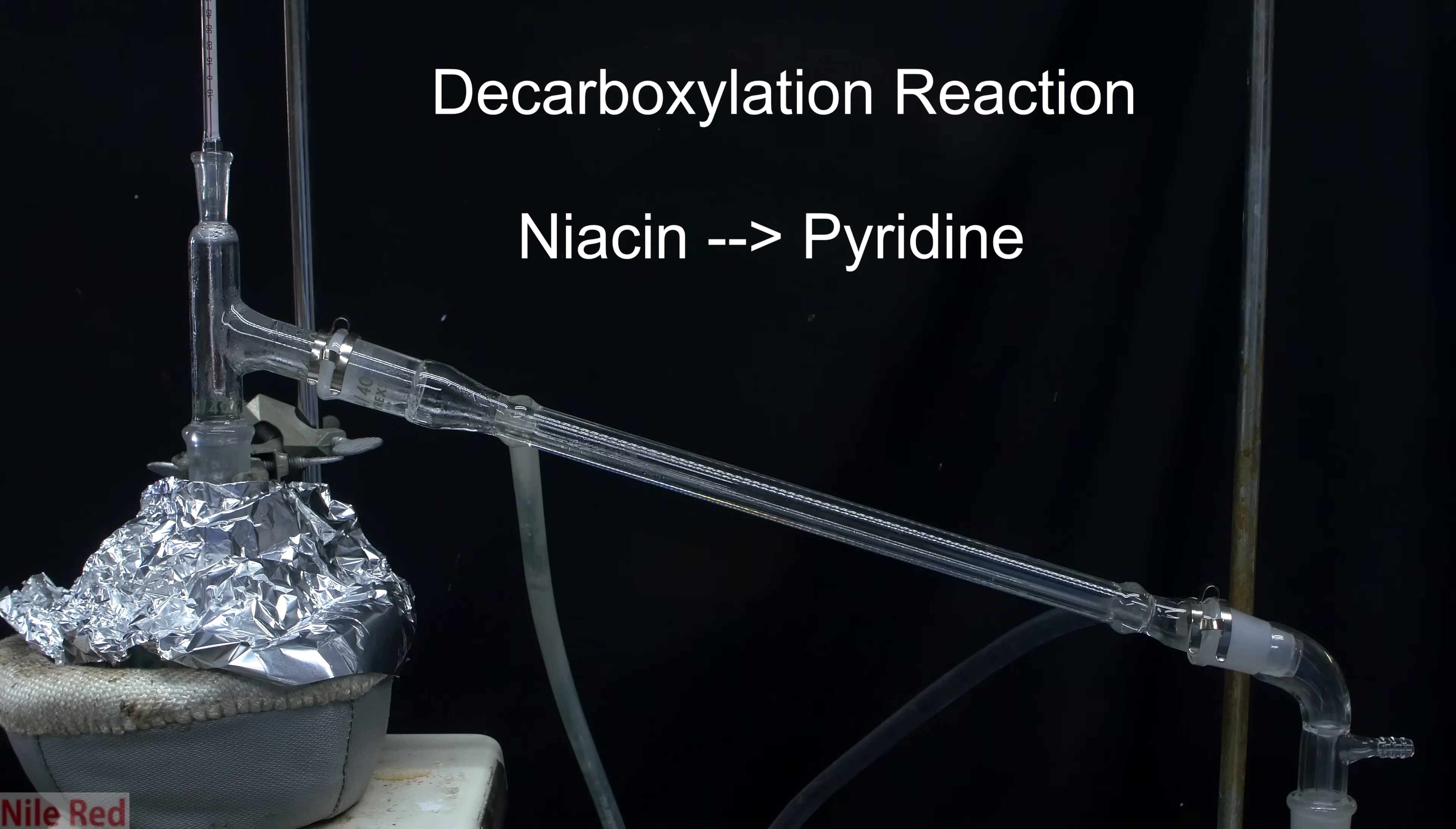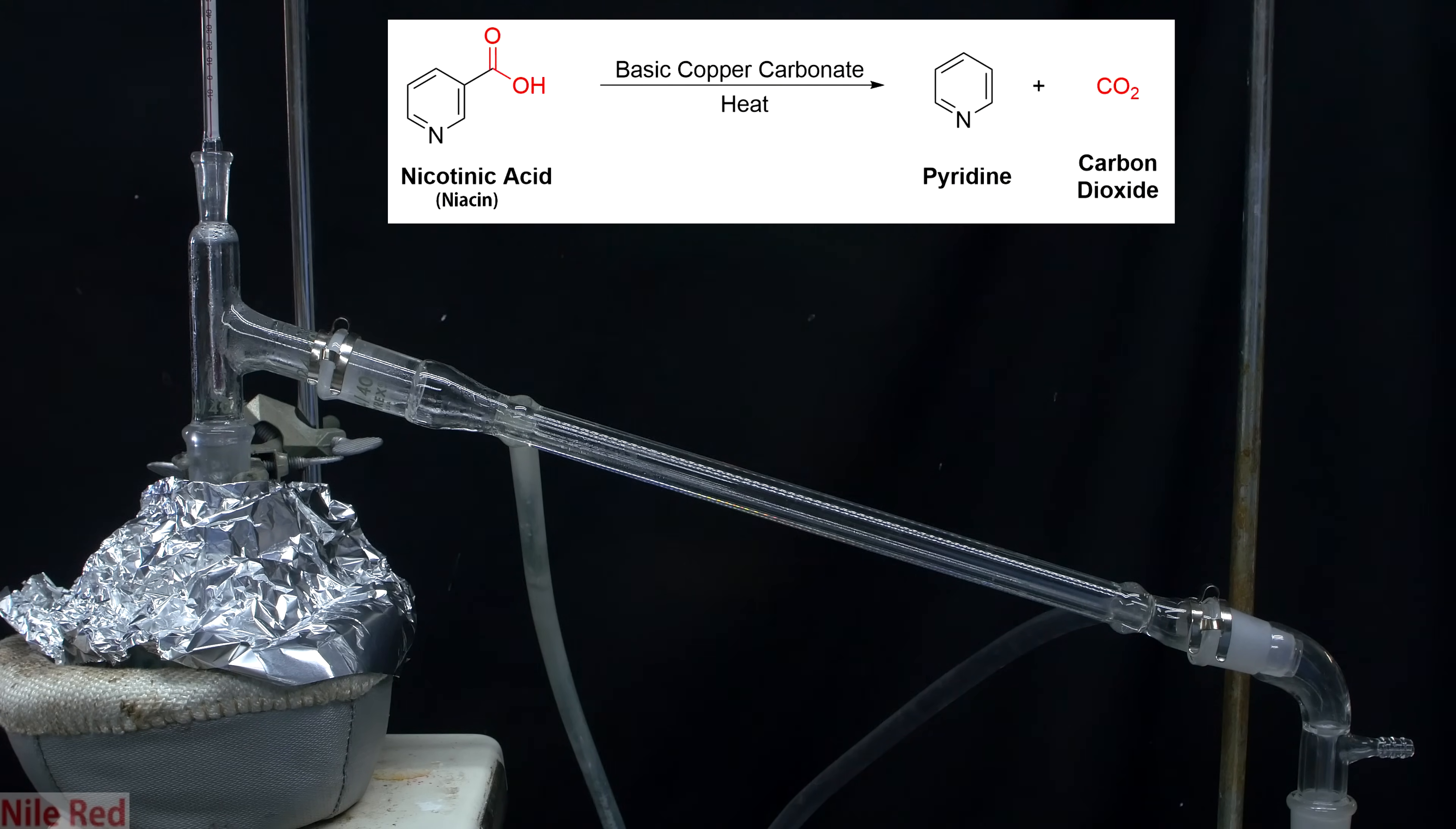In very simple terms, this reaction is known as a decarboxylation reaction, and we're converting niacin to pyridine. Highlighted here in red, you see the carboxylic group of niacin, and we're effectively just using heat to pop it off and produce pyridine and CO2. Decarboxylations are kind of finicky. Some molecules will spontaneously pop off their carboxylic acids under heat, but in the case of niacin, we actually needed a catalyst to help things along.